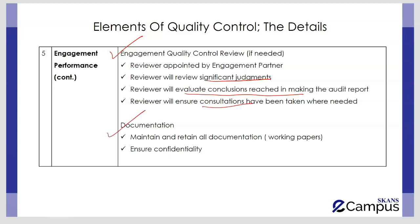The last element of engagement performance is documentation. All relevant documentation and working papers must be maintained and confidentiality must be ensured. Audit firms need to maintain their working papers for a minimum of five years, though this varies from country to country — it is typically five to seven years for most countries.